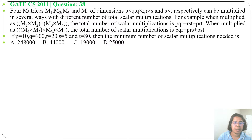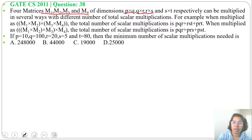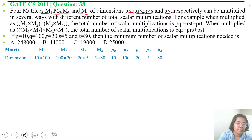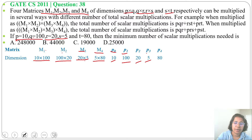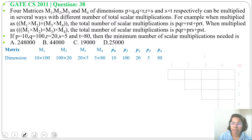We have four matrices M1, M2, M3 and M4 with dimensions P×Q, Q×R, R×S and S×T. Substituting the values: M1 is 10×100, M2 is 100×20, M3 is 20×5, M4 is 5×80. For solving this question we need P0, P1, P2, P3 and P4: P0=10, P1=100, P2=20, P3=5, P4=80.